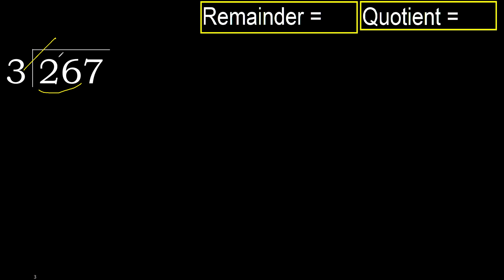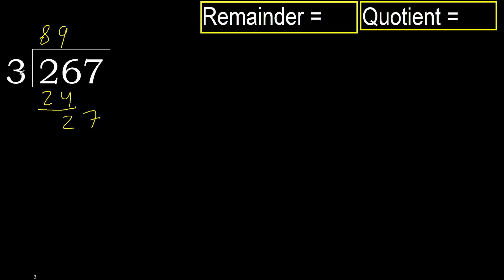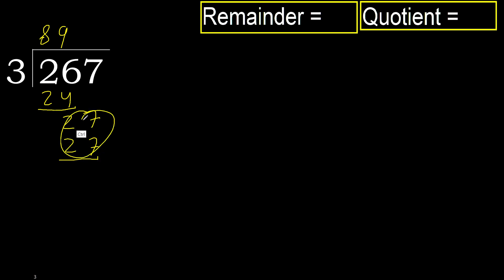3 multiplied by 8 gives 24, which is not greater, so we use 8. Subtract. Next, bringing down gives 27. 3 multiplied by 9 is 27, which is not greater. Ok, subtract.